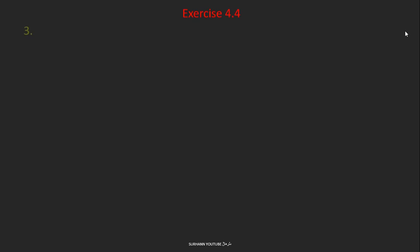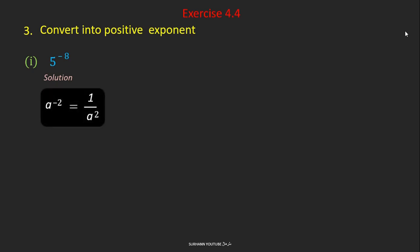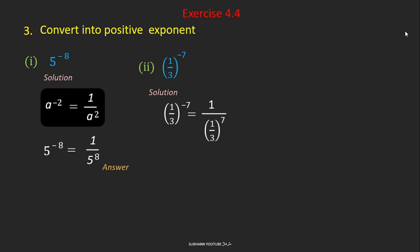Exercise 4.4, question number 3 says to convert into positive exponents. Problem number 1: 5 to the power minus 8. For converting into a positive exponent, we use the formula learned at the start — just shift the places of numerator and denominator and change the sign of the exponent. For problem number 2, 1 over 3 to the whole power minus 7, do the same: shift numerator and denominator, change the sign of the exponent, then simplify to get the final answer.